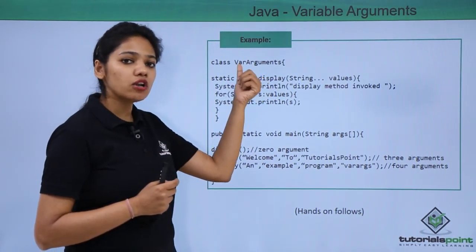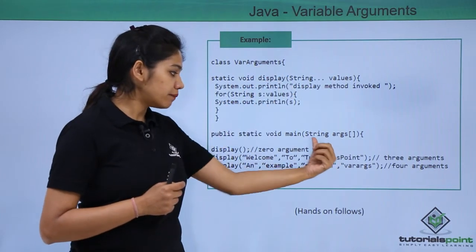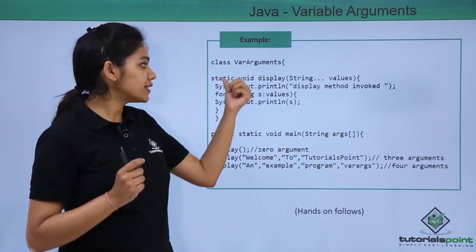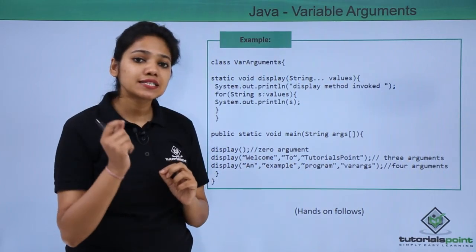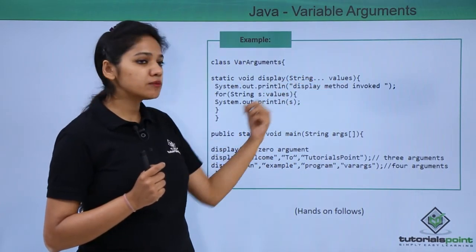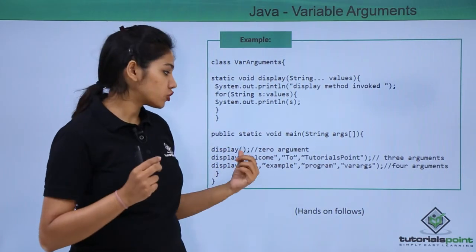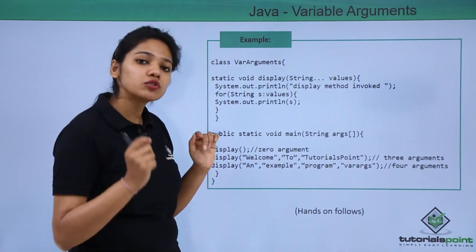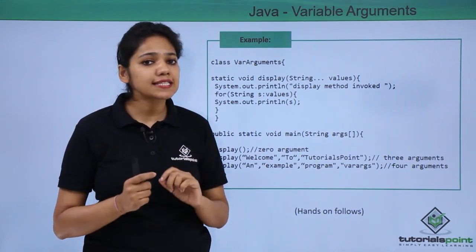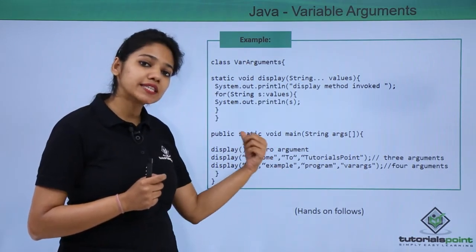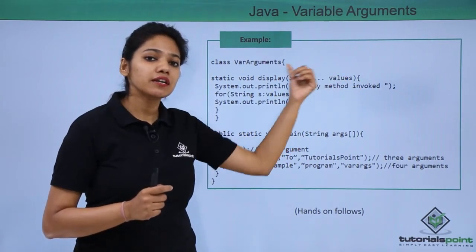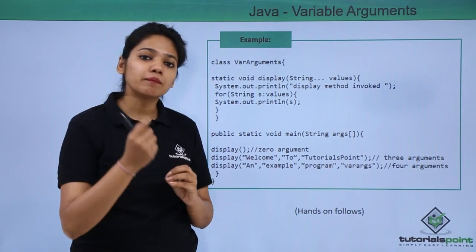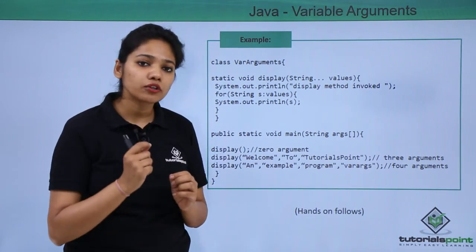We have created a class called VarArgument. In the main method, it first calls a display method with no argument. The display method has a string data type variable argument. The main advantage of variable arguments is that it also allows zero values — it is not necessary to pass a value, since the method can accept zero or more arguments.